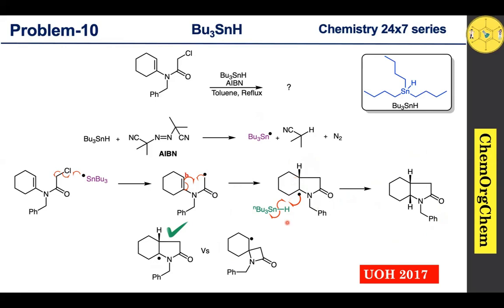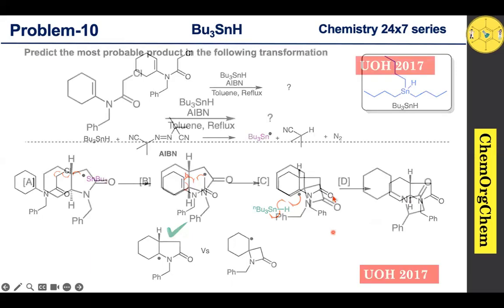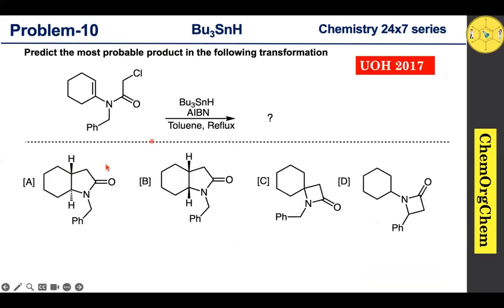Therefore, hydrogen abstraction takes place from the top face, leading to the corresponding product. The final stereochemistry of this product is relative stereochemistry, not absolute stereochemistry. Based on our discussion, the correct option among the four answers is answer B.